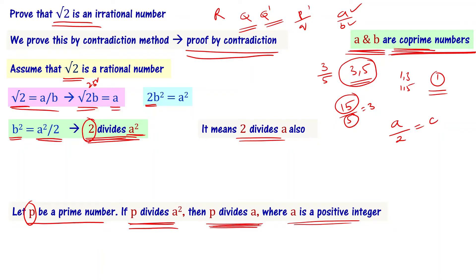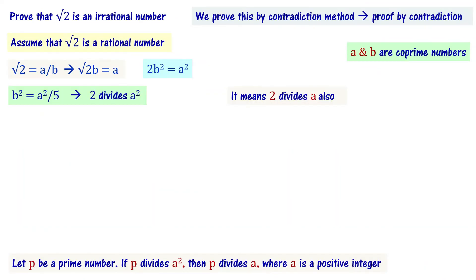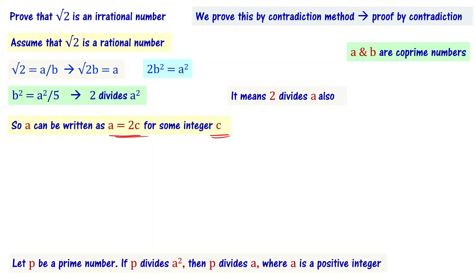So we write A equal to 2C for some integer C. Substituting back into the equation 2B squared equals A squared, we get A squared equals 2C whole squared, which equals 4C squared. Therefore 2B squared equals 4C squared.